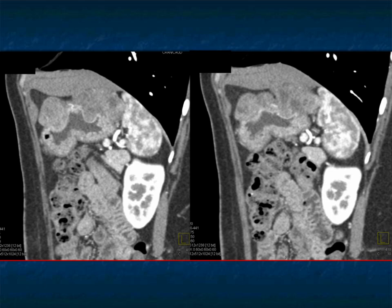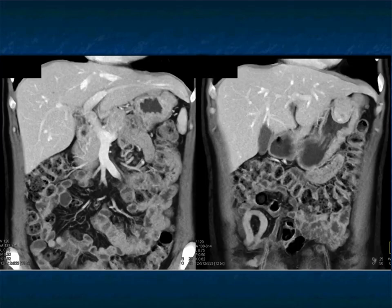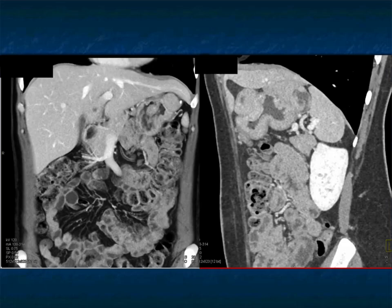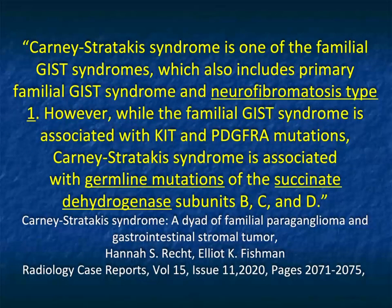Things you could think about would be polyposis — though it really doesn't look like that — or metastasis. Multiple leiomyomas might be a thought. But there aren't many things to think about for multiple solid gastric masses that look like this. This was very unusual for us — we wrote up a case report article about this patient. Here's some more 3D volume-rendered views. This was first described in 2002 — familial paragangliomas and GIST tumors. It involves germline mutations, and is one of the familial GIST tumor syndromes, which also includes primary familial GIST syndrome and neurofibromatosis type 1.